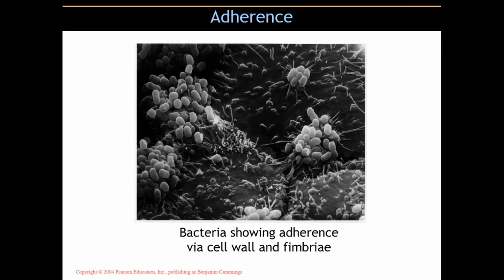Here's a micrograph showing adherence. You can see the bacteria as those little round lumps, growing in small groups and colonizing. You can see the strands sticking out of the bases of those lumps — those are the fimbriae rooting the bacteria into the substrate, which is most likely a mucous membrane.